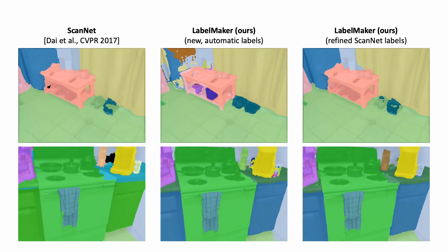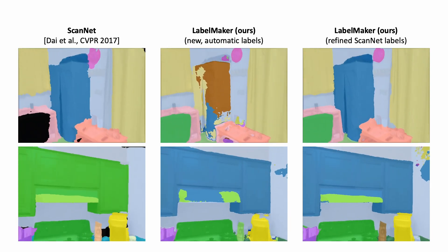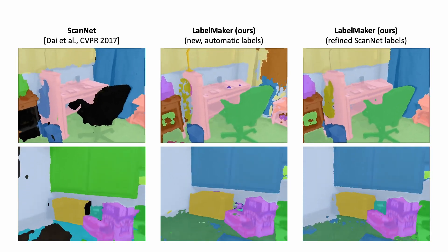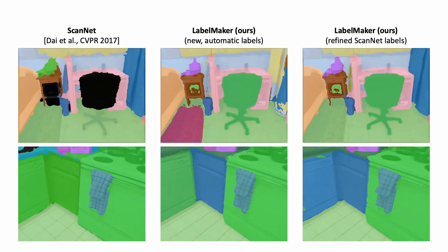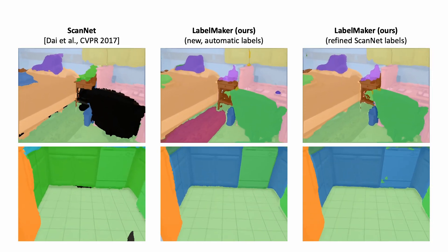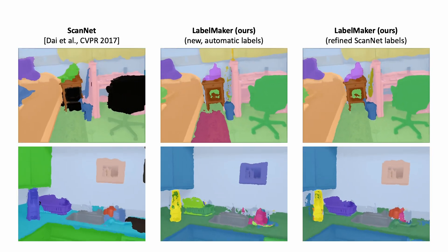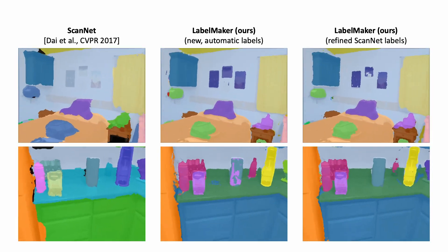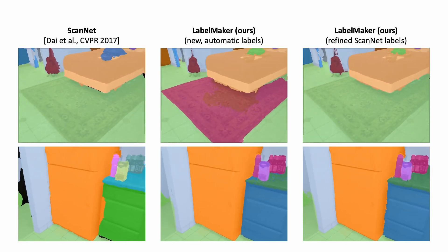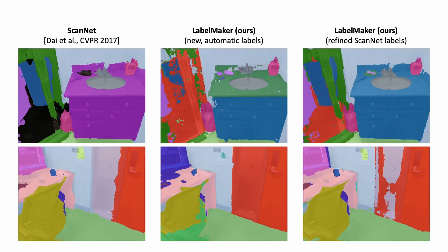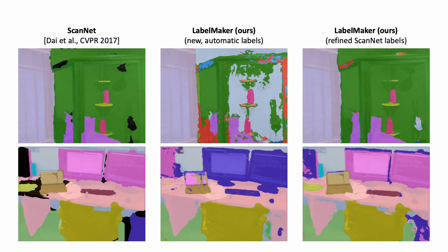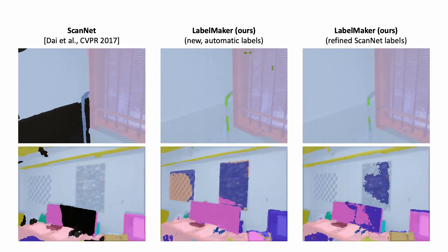Now let's look at the results. Here we show results on the ScanNet dataset. From left to right, we show the original ScanNet labels, our fully automatic labels, as well as the LabelMaker labels that combine model predictions and the existing human annotations. We can show that our labels are more consistent and often times discover objects that are not annotated in the original dataset, for example, foliage and mats.